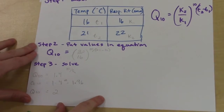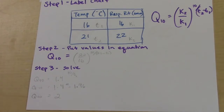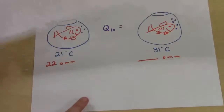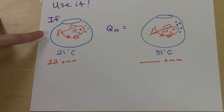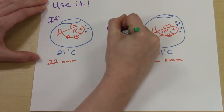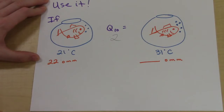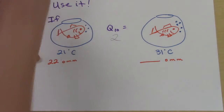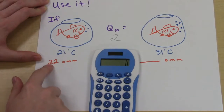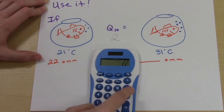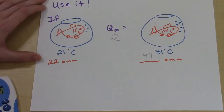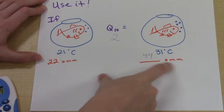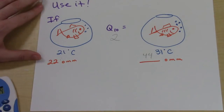That may be all the question asks — just to find Q10 — but now you can also use it to make predictions. If we have that same fish at 22 operculum movements per minute at 21°C, and Q10 is 2, we can predict what the rate will be at 31°C — 10 degrees higher. All we do is multiply 22 by 2, which gives us 44. So we can predict the fish's respiration rate will be 44 operculum movements per minute at 31°C.